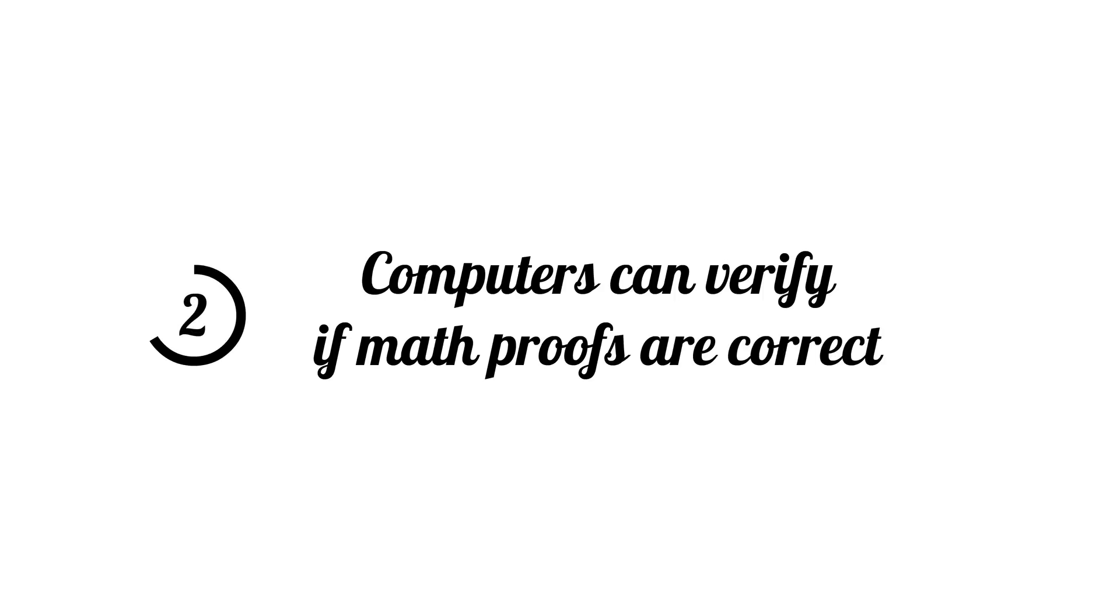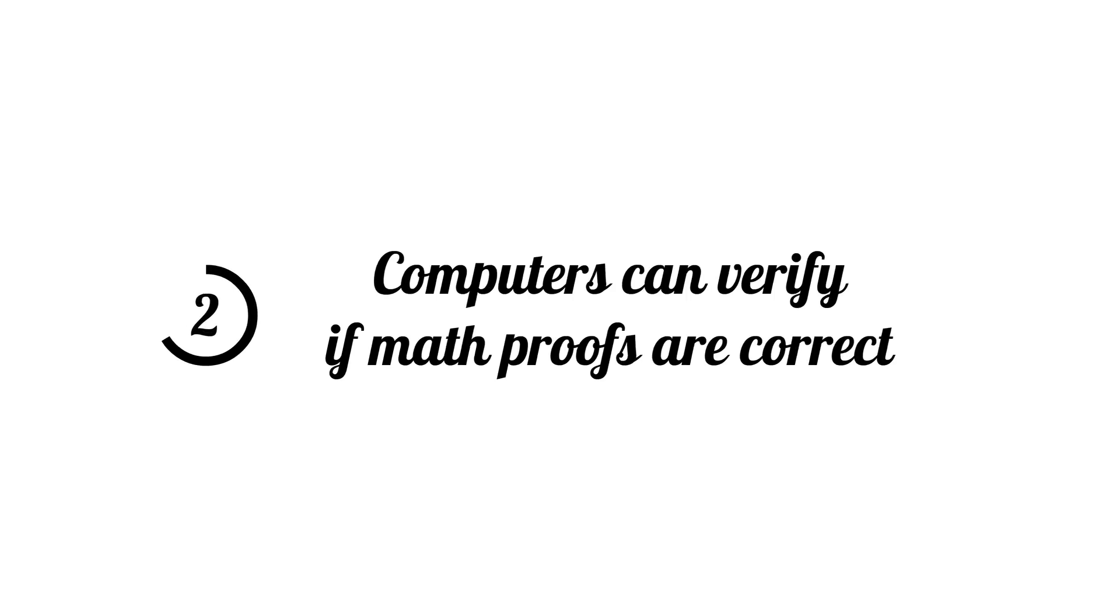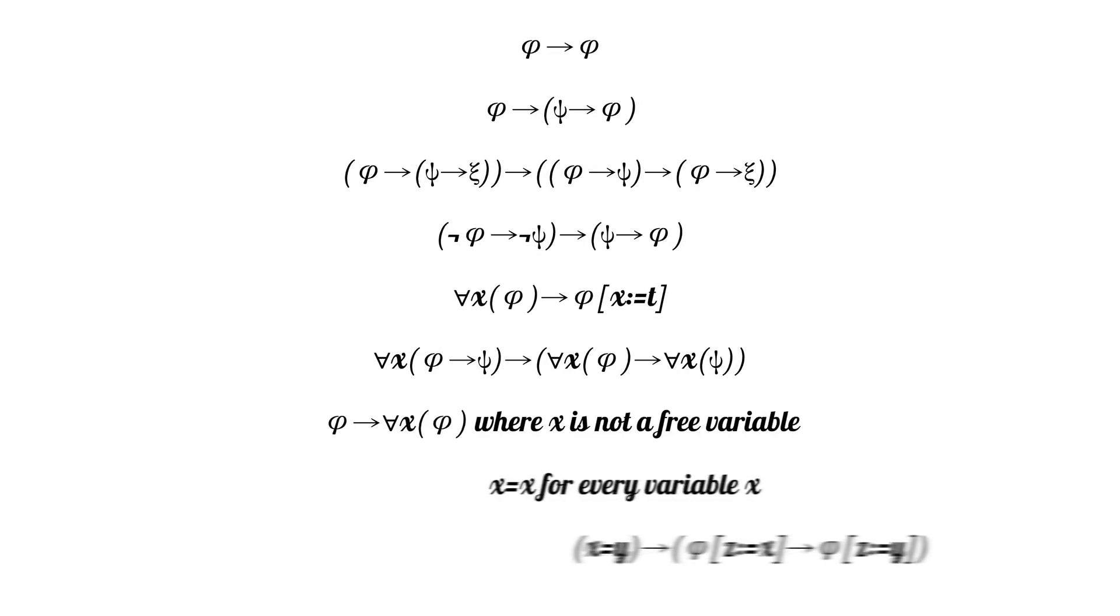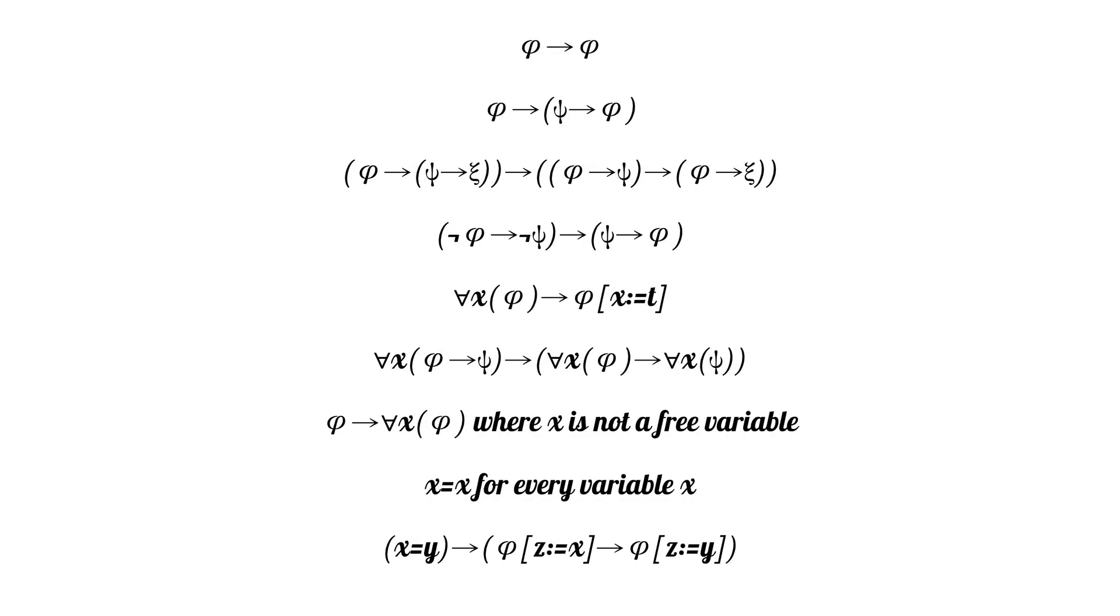Our second important note is that computers can verify whether or not math proofs are correct. We actually already have programs that do this, such as the Mizar system or metamath. The rules of logic boil down to string manipulation, which computers are really good at doing, so we can write pretty simple and short programs which can verify a math proof.